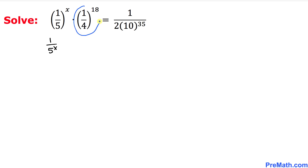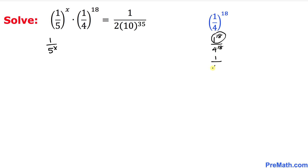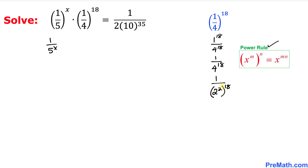Now let's focus on the second part: 1 fourth power 18. We can write 1 fourth power 18 as 1 power 18 divided by 4 power 18. Since 1 power 18 equals 1, this becomes 1 divided by 4 power 18. Now 4 can be written as 2 power 2, so we have 1 divided by 2 power 2, all raised to the power 18. Applying the power rule, we multiply the exponents: 2 times 18 gives 2 power 36.